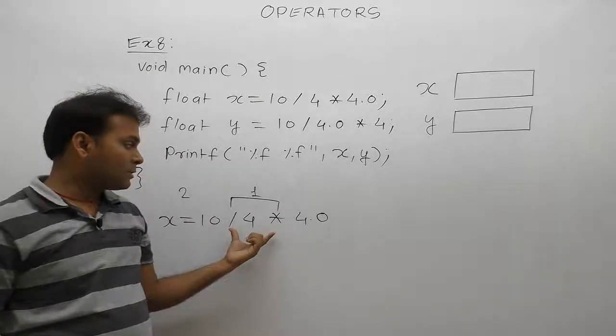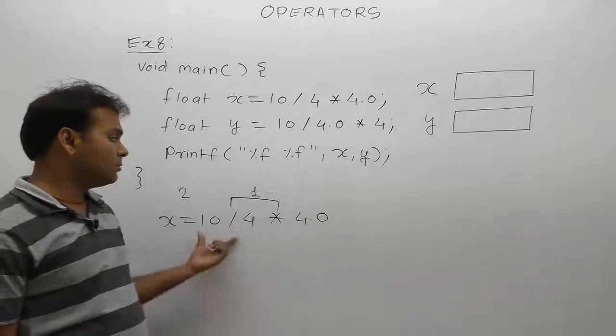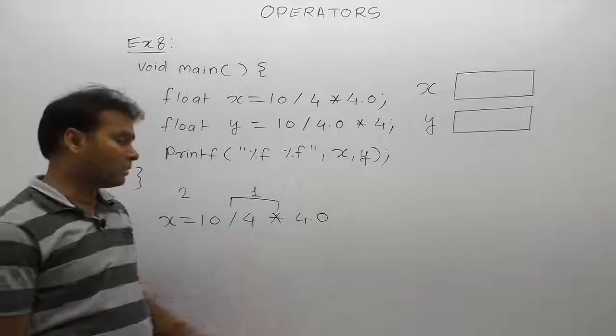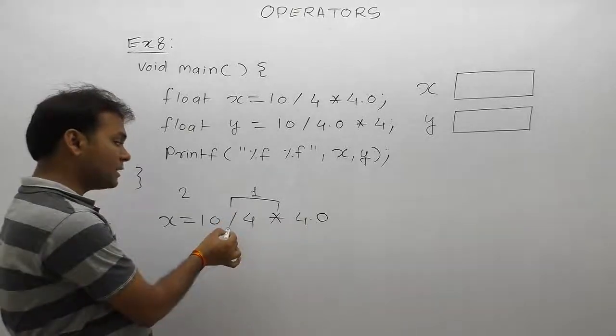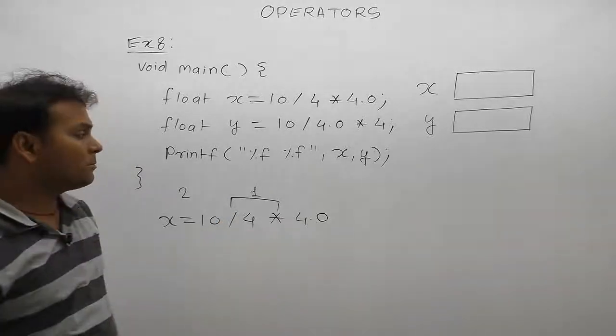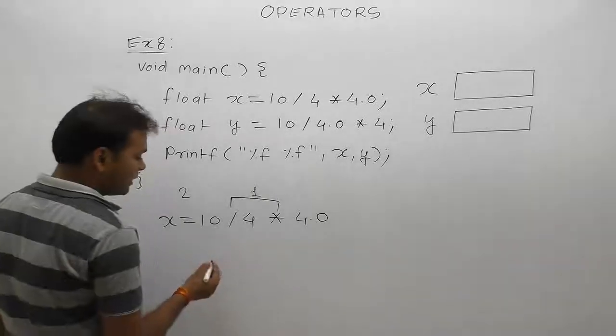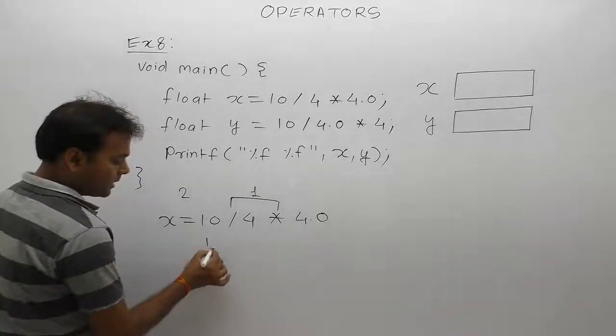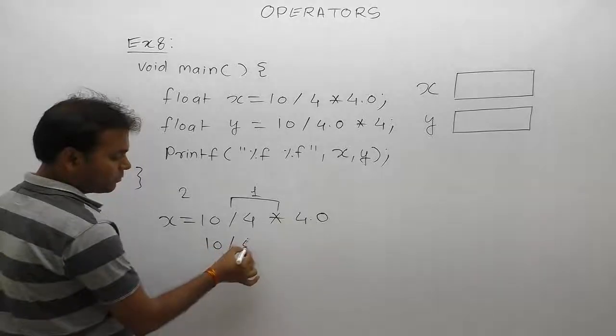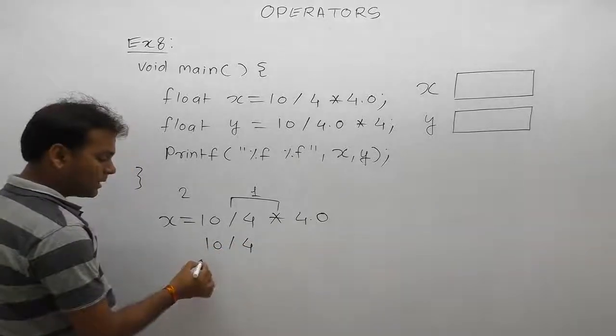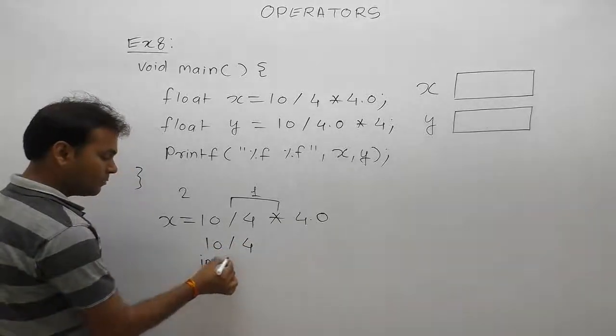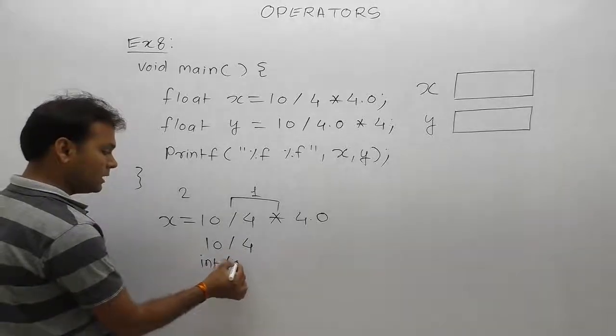Now we apply the associativity rule. Associativity rule for binary operators is left to right. According to this, we perform division first. What is the first operand for division? 10. Second operand is 4. 10 is integer, 4 is also integer, therefore the result is also integer.